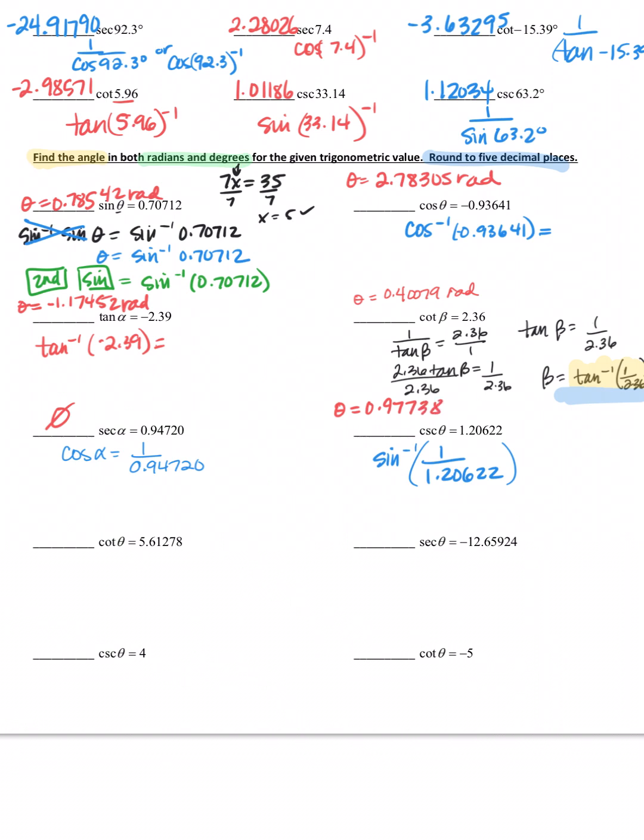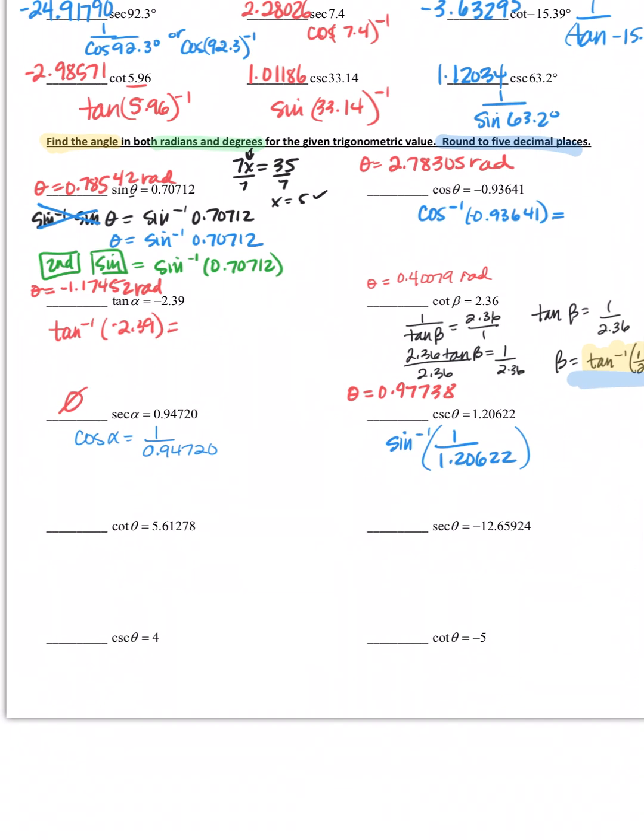Continuing on, we keep going with these. Cotangent - what would that look like? That would mean I need to do the inverse tangent of 1 over 5.61278. Inverse tangent of that gives me a theta of 1.76315 radians.